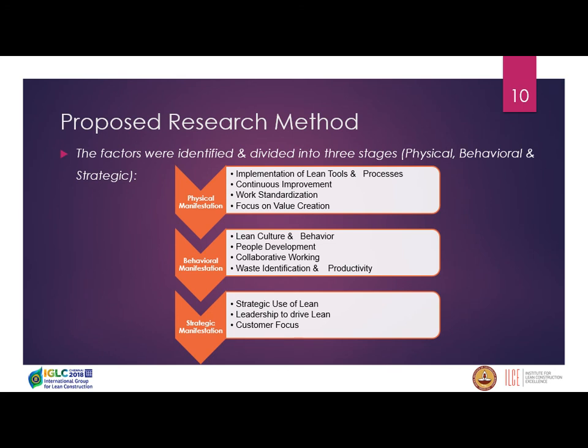From the literature, we identified parameters for each stage. In the physical stage: implementation of lean tools and processes, continuous improvement, and work standardization. In the behavioral manifestation stage: lean culture and people development — training people towards lean. In the strategy stage: customer focus and leadership. Most parameters are similar to earlier papers on lean maturity.